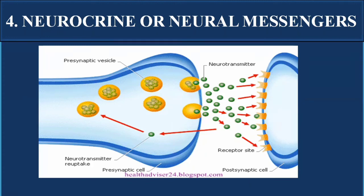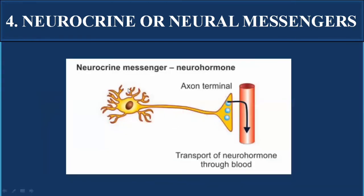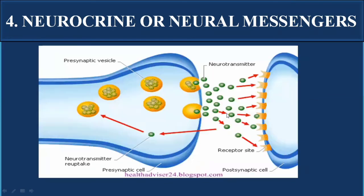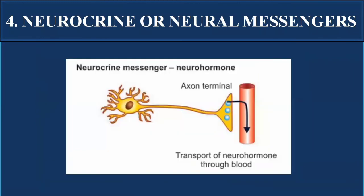In neurocrine signaling, the pre-synaptic cell is the controlling or signaling cell and the post-synaptic cell is the target cell. Some neurons also release hormones, known as neurohormones, which are released from the axon terminal into the bloodstream and carried to target cells or tissues to perform specific functions.